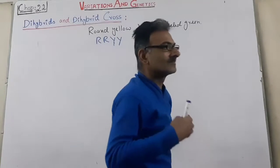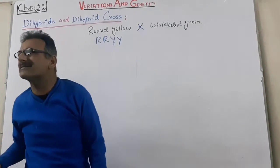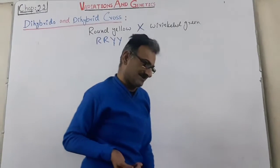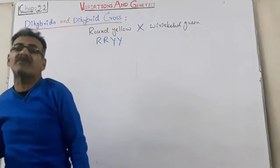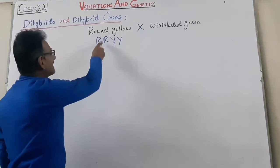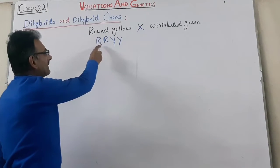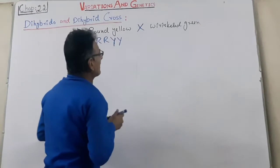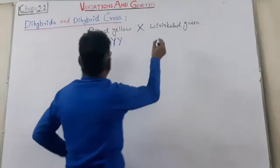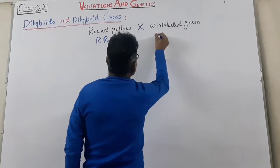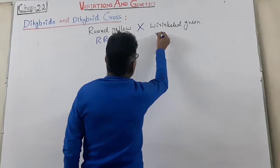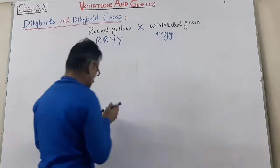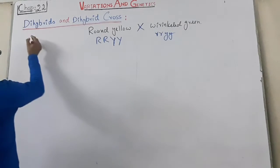The capital letter is used for dominant and the small letter is used for recessive. At least two letters represent one character. Round character is represented by capital R capital R, and yellow character is represented by capital Y capital Y. Similarly, for wrinkled: small r small r, and for green: small y small y. This is the P1, the first parental generation.